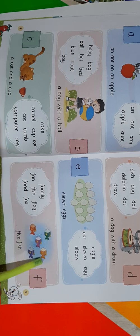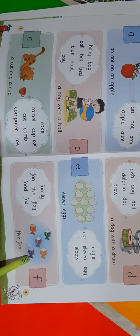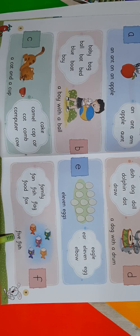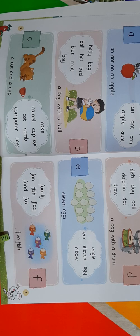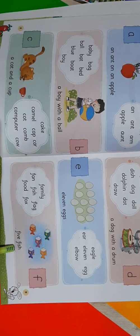Now here we can see one picture of fish. Can you see it? So let's read out the sentence below the picture: five fish. Easy. Read it once again: five fish. Isn't it easy? Five fish. Nice, no?